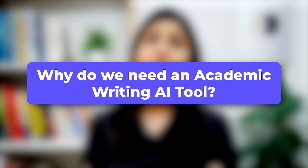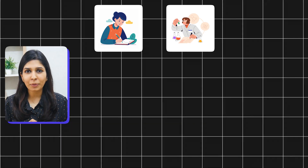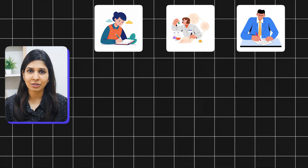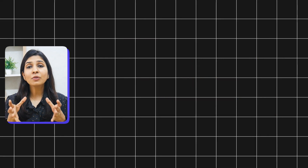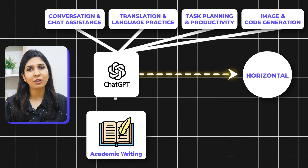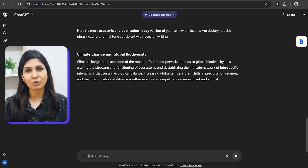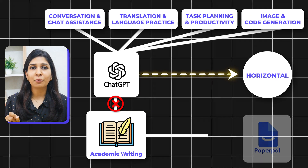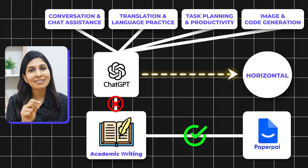First, let's understand why you even need an academic writing AI tool. Whether you're a student working on an assignment, a researcher working on a paper, or a professor working on a grant — using tools like ChatGPT for writing is not always the best solution. These tools are horizontal; they're designed for a wide range of tasks and are not specifically trained on academic writing. They also don't offer an ecosystem where you can continuously work on your paper or manuscript. This is exactly the kind of problem tools like PaperPal are built to solve, giving you research-aware writing assistance designed for academia.